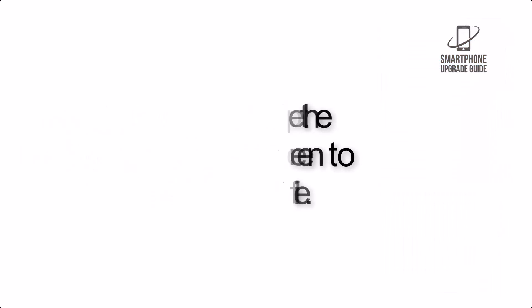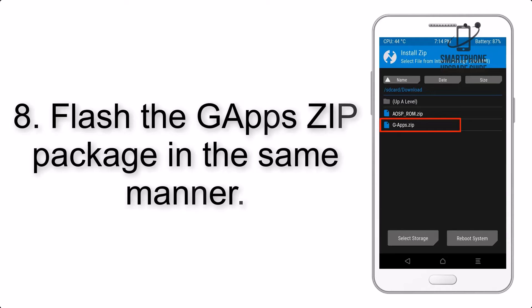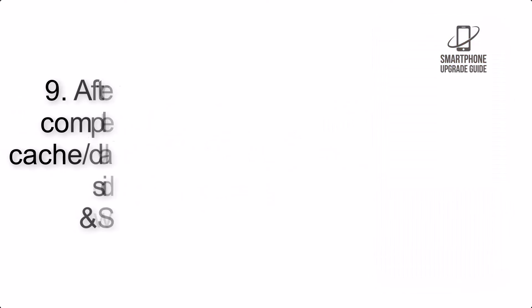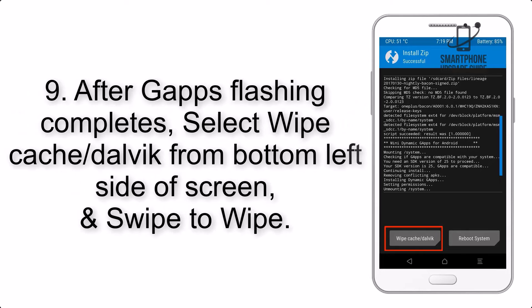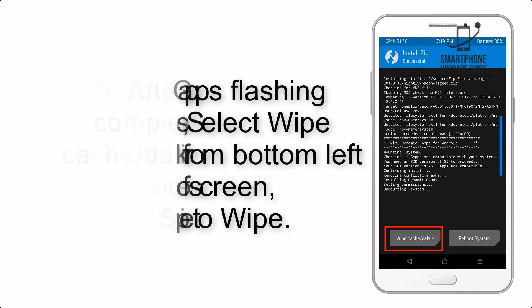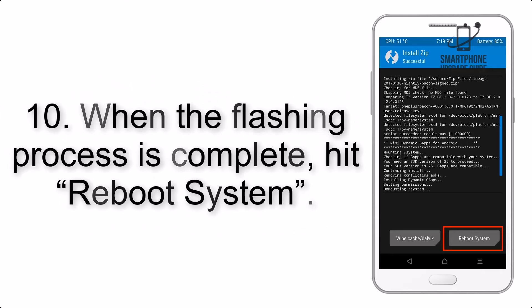Step 8: Flash the gapps zip package in the same manner. Step 9: After gapps flashing completes, select Wipe Cache and Dalvik from the bottom left side of the screen and swipe to wipe. Step 10: When the flashing process is complete,